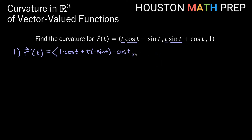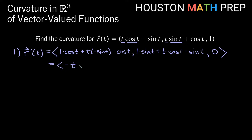Same thing for the second component with the product rule: derivative of t is 1, times sin t, plus t times derivative of sin t which is cos t. The derivative of positive cos t is −sin t, and the derivative of the last component 1 is 0. Now we can clean things up: cos t − cos t cancels to 0 in the first component, giving just −t sin t. In the second, sin t − sin t cancels to 0, giving just t cos t. So r-prime of t simplifies to ⟨−t sin t, t cos t, 0⟩.